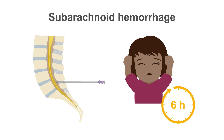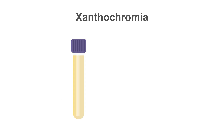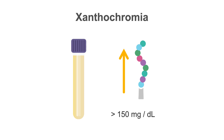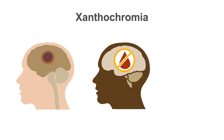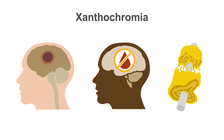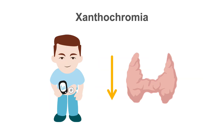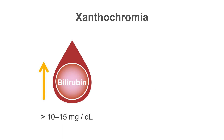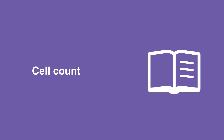Xanthochromia is not likely due to a traumatic tap, where the fluid would be frankly bloody and xanthochromia would not yet be present. Xanthochromia can also occur when the protein concentration of the CSF is elevated above 150 milligrams per deciliter, or may be caused by brain tumors, stroke, Guillain-Barré syndrome, and systemic disorders such as diabetes mellitus and hypothyroidism.